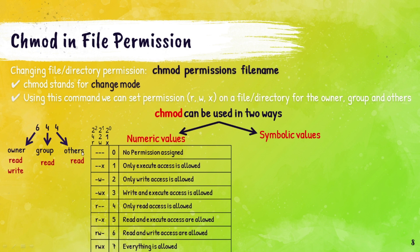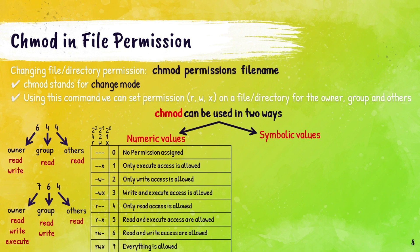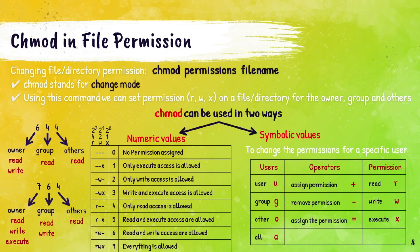Here we will take one more example. In permission 764: number 7 is given to the owner with all three permissions — read, write, and execute. Number 6 for group refers to read and write permission only. And lastly number 4 means read permission only. I hope this much is clear. Now we will see another way to use the chmod command.